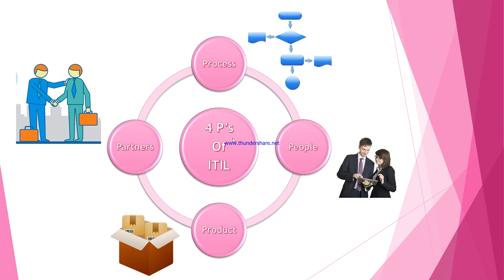When we talk about a process, it has to be executed by someone, and for that purpose the second P comes in — People. The people who execute this process can be an individual, a group of people, or a department. That is why the second P inside ITIL stands for People.